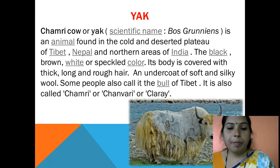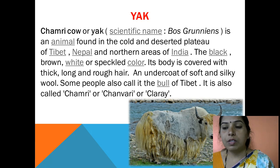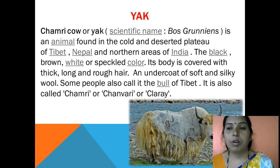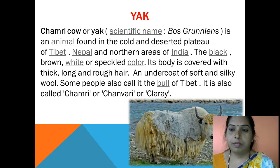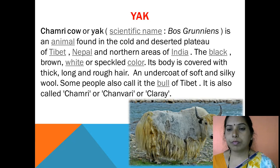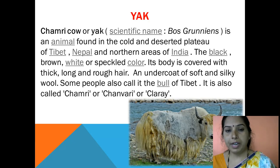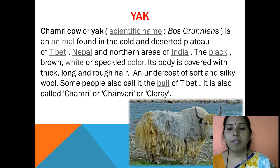The next animal that gives us wool is the yak, also called the Chamari cow. Its scientific name is Bos grunniens. It is mainly found in the cold desert plateau of Tibet and Nepal, and in northern areas including Bhutan. It comes in black, brown, white or speckled colors. Its body is covered with thick, long and rough hair, with a soft and silky wool undercoat. Some people call it the wool of Tibet. It is also called Chamari, Chanwari, or Clare.